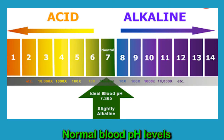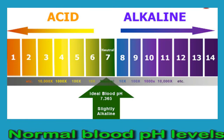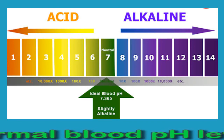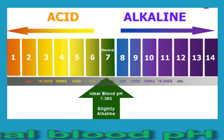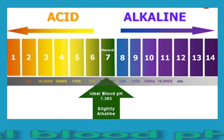The lungs can help regulate blood pH rapidly through the process of expelling carbon dioxide, sometimes producing changes within seconds. For example, when someone exercises they produce more carbon dioxide, so they breathe faster to prevent the blood from becoming too acidic. The kidneys regulate the pH of the blood by excreting acids in urine. They also produce and regulate bicarbonate, which increases blood pH. These changes take longer than those that occur due to breathing, potentially taking hours or days.